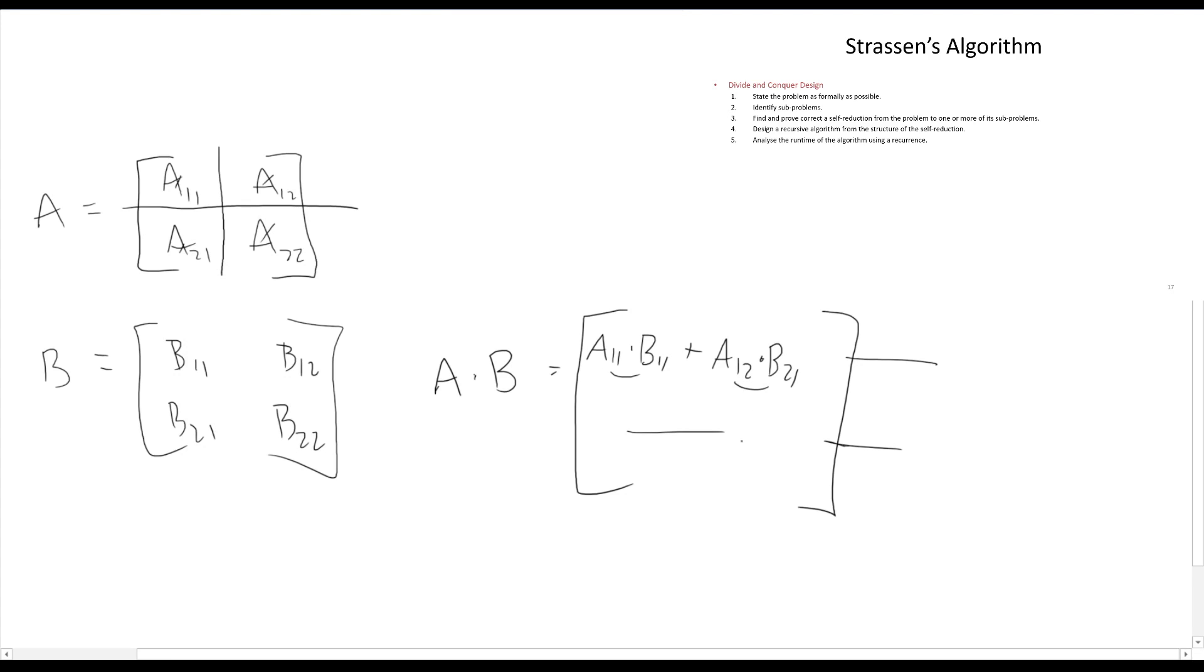And we could see that what would we end up with? Well, I've got one, two multiplications here. I'll have two in each of these. So I'm going to end up with eight multiplications, each one of size n over two. How much extra work did we do? Well, we had to do all these additions. How many additions is that? Well, that's going to be about n squared additions.